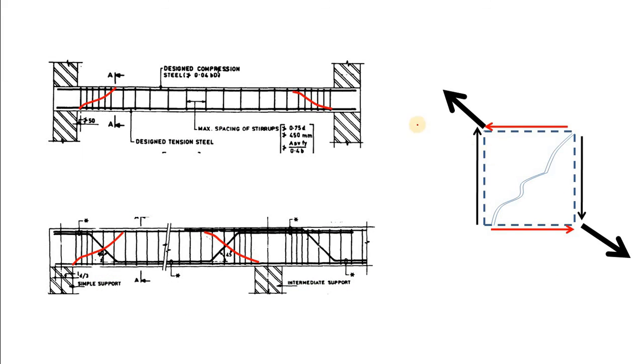In normal structure, you have seen that the stirrup is closely spaced near this support compared to the mid span. Why this happen? Because in real structure, they are loaded with UDL or Uniformly Distributed Load. And in that case, the shear force is like this. It is maximum at the support and minimum at the mid span. That's why the stirrups are closely spaced near the support. The crack tends to occur like this from this figure at support. And you resist this crack by providing this vertical stirrup and protect your concrete.